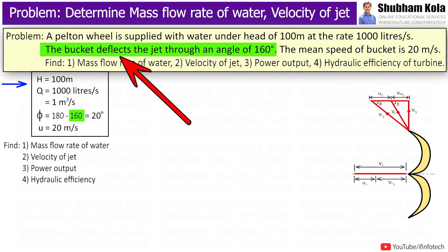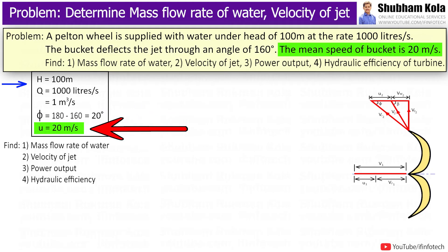Here bucket deflects the jet through an angle of 160 degrees. Therefore, phi is equal to 180 minus 160, which equals 20 degrees. And mean speed of bucket u is 20 m per second.